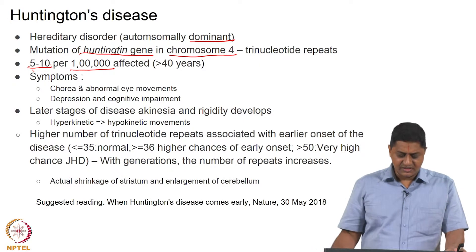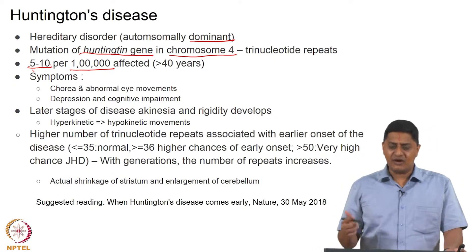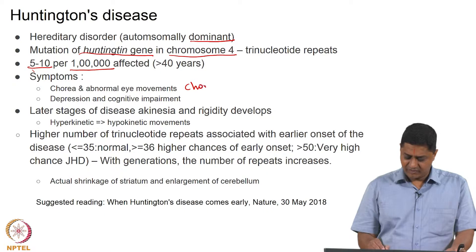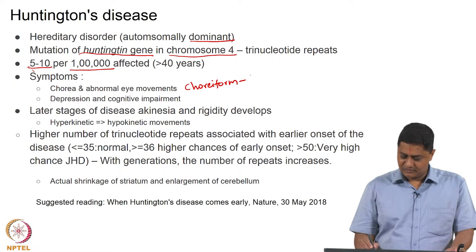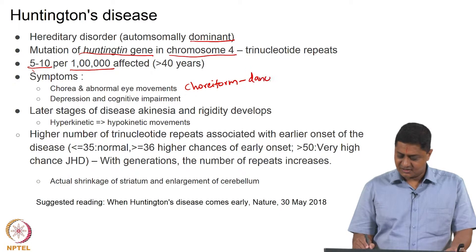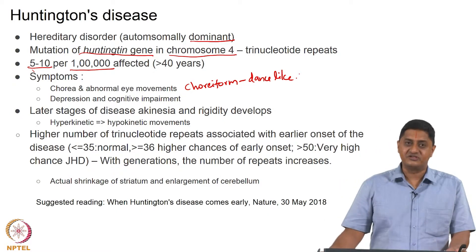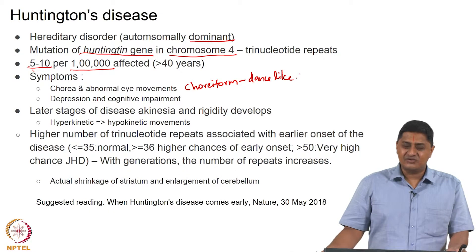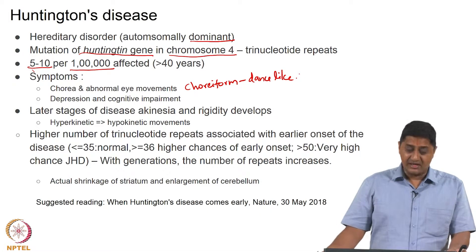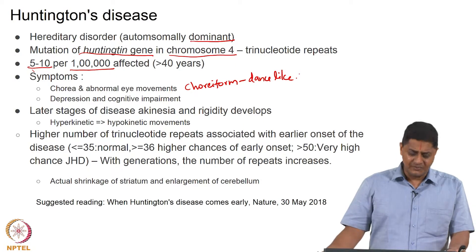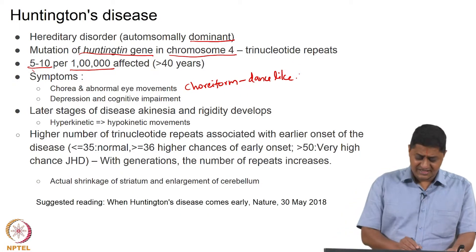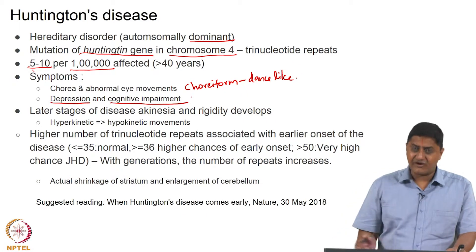Symptoms include choriform movements — dance-like movements. The word 'choriform' shares its root with choreography, which means dance-related. So these individuals, when they make movements, it looks as if they are dancing. Eye movements are also abnormal. This is usually accompanied by other non-motor symptoms such as depression and impairment of cognitive function.